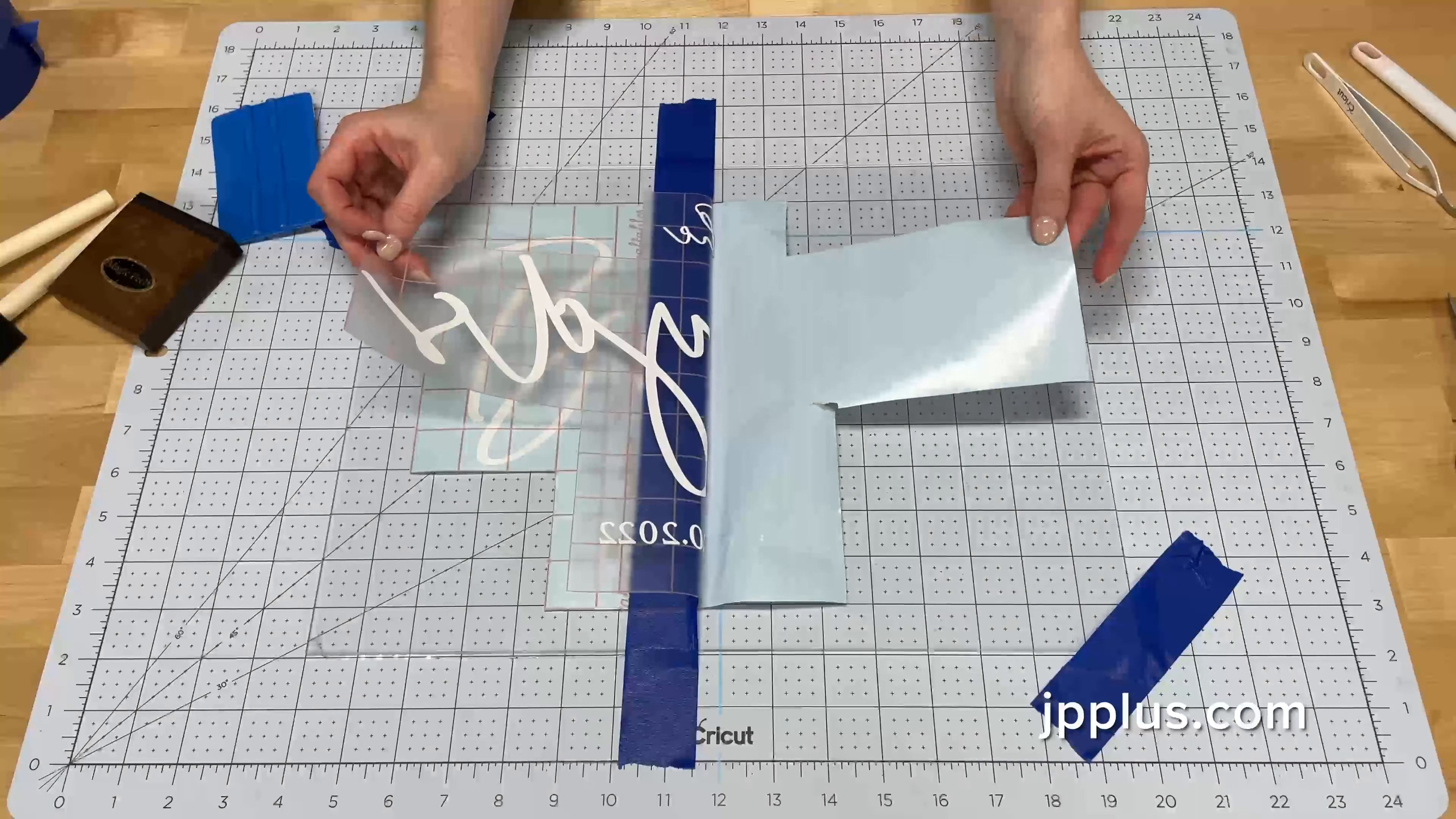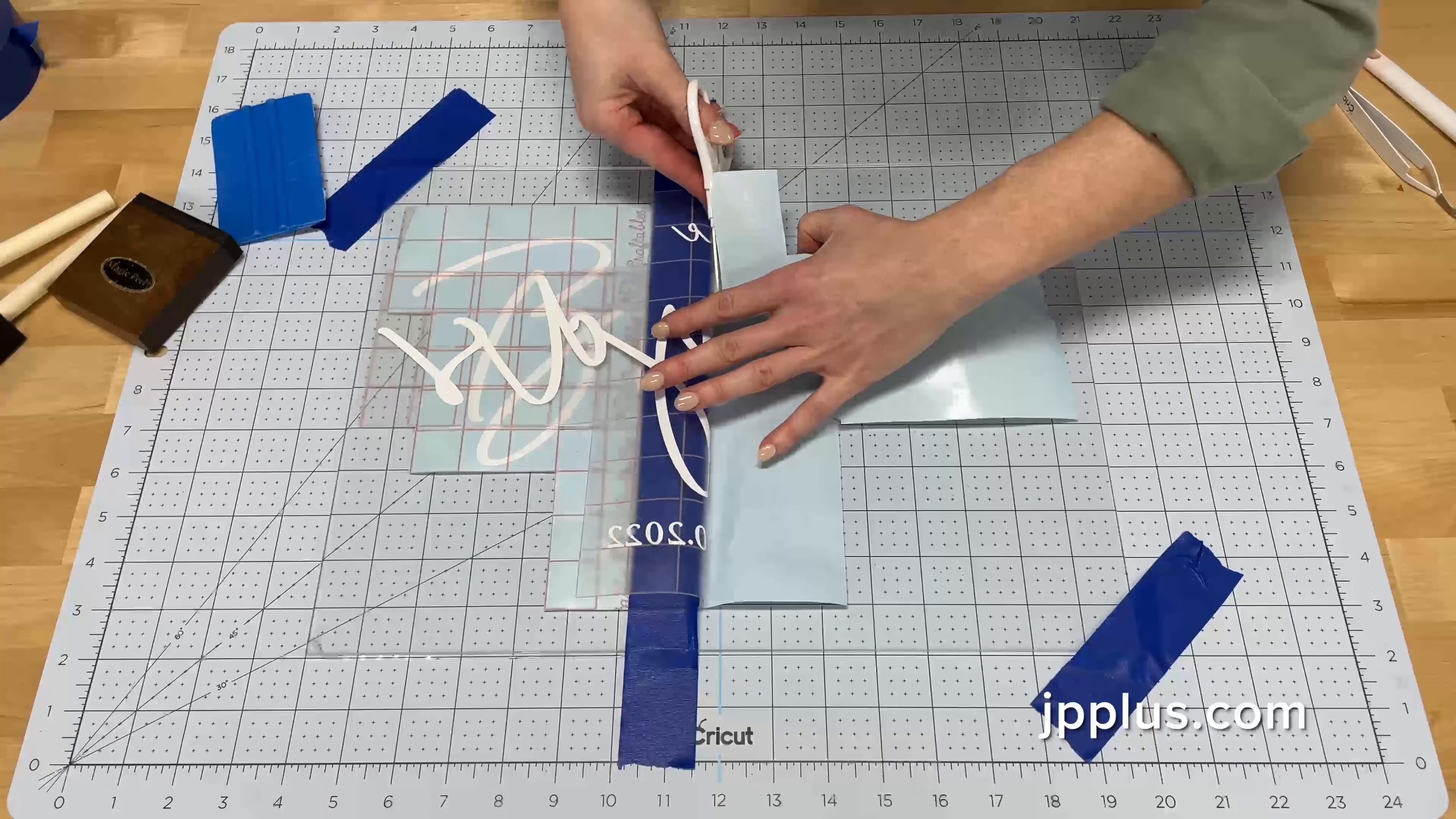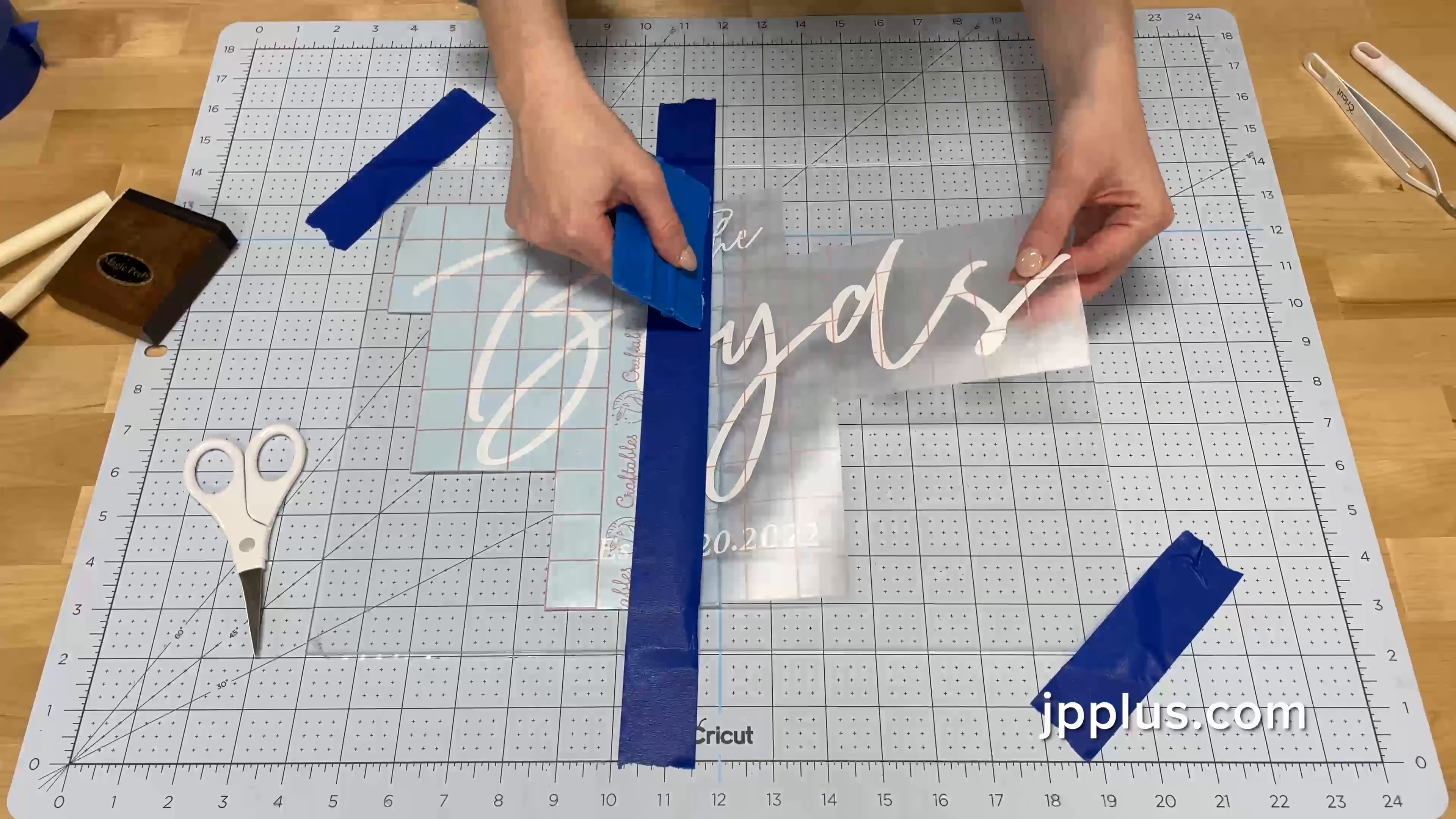So once we've got the paper removed from the back of the vinyl transfer, we're going to take our scissors and carefully remove the paper without scratching the clear acrylic. And then we are going to use our squeegee and slowly transfer the vinyl to the clear acrylic.